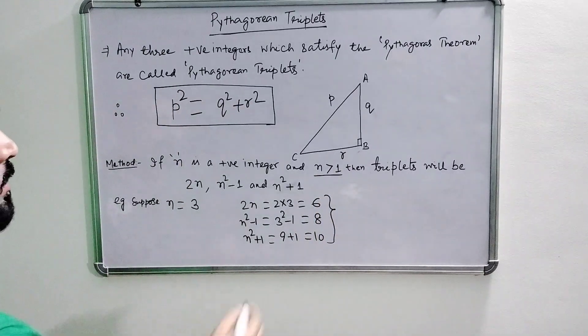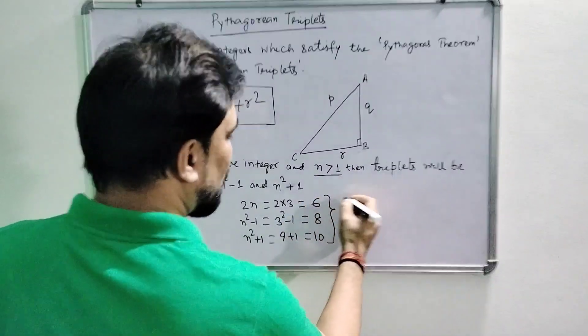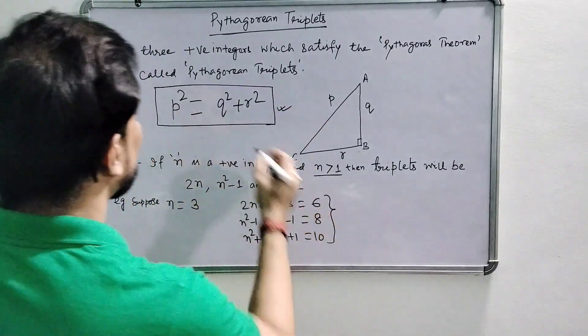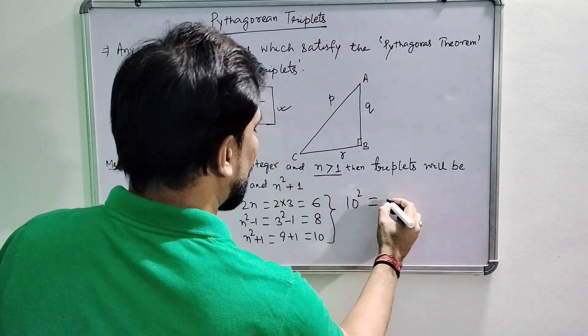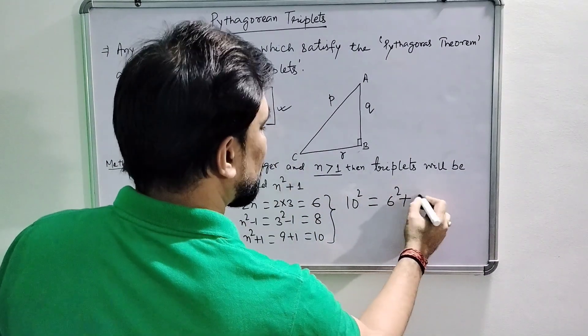Now these positive integers are Pythagorean triplets. To verify, we can put these values in and check. The value of 10² should equal 6² + 8².